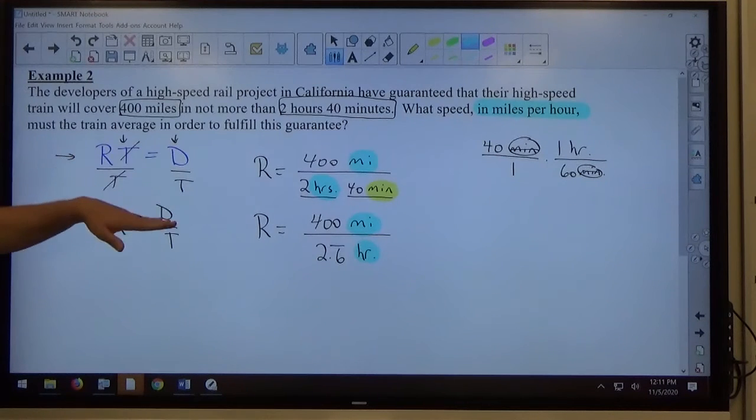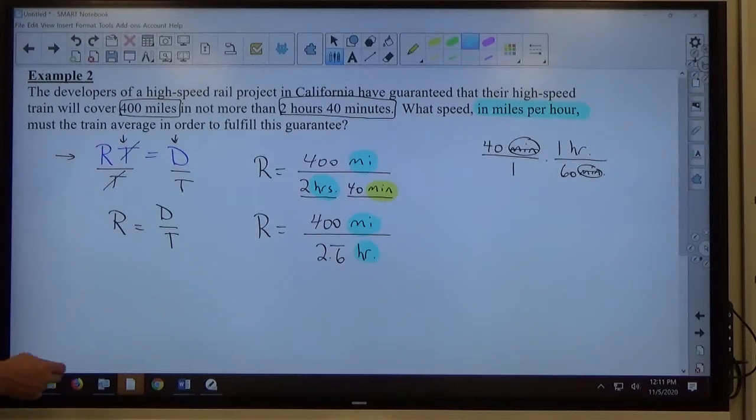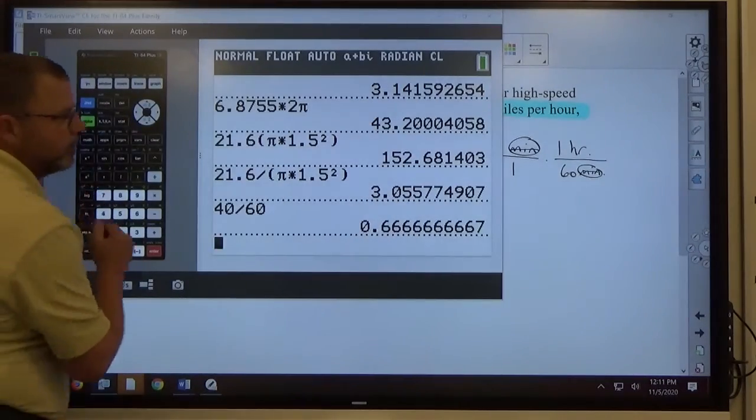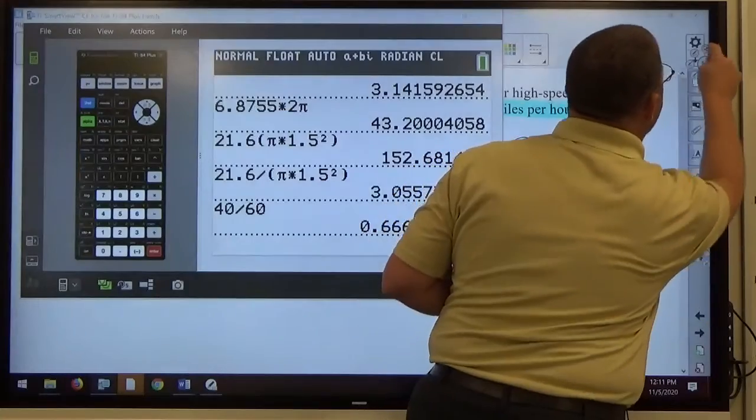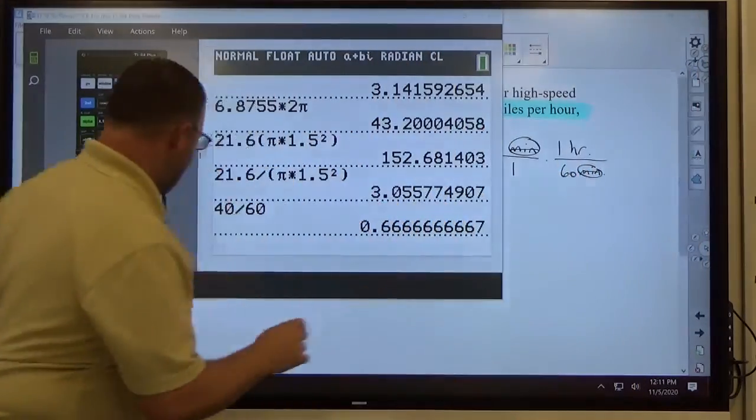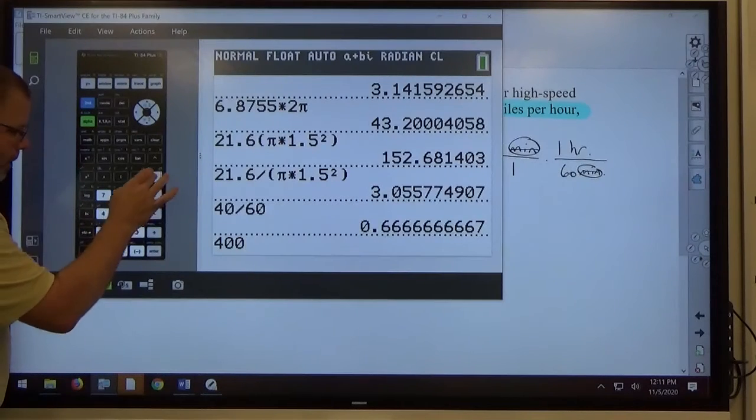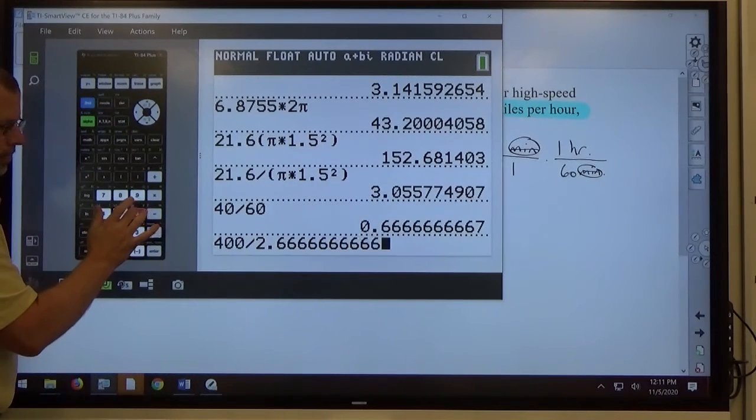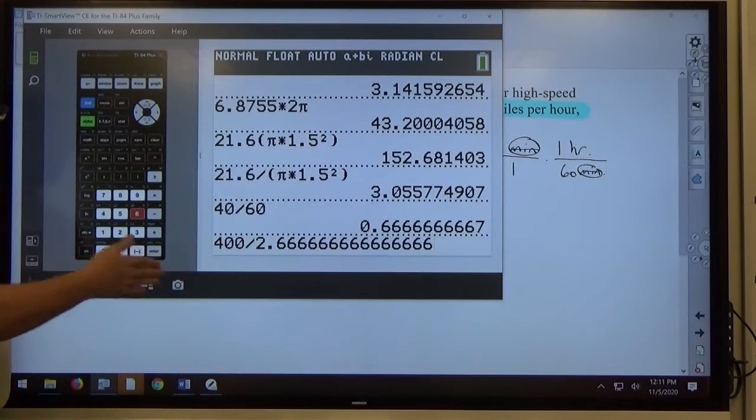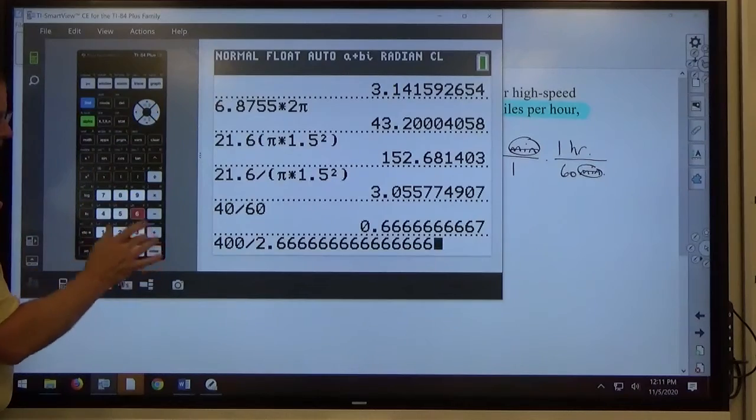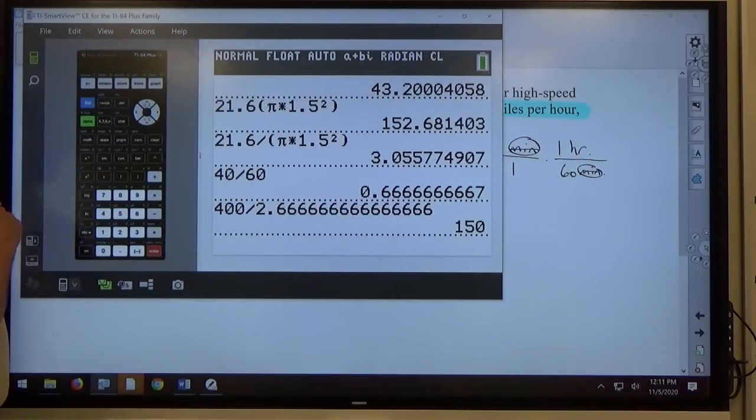So, that's what I need to do to get the answer here, divide 400 by 2.6 repeating. So, I get my calculator out, I type in 400. So, 400 divided by 2. And if you just type in a calculator, a bunch of 6s. That might as well be 6 repeating. Calculators typically hold about 13 or 14 decimal places in. So, if you get a whole bunch of decimal places, that's the best you can do. It comes out to 150.